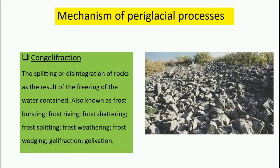The first mechanism is congelifraction, a weathering process in periglacial climates including freeze-thaw action, contraction cracking, and chemical weathering — but freeze-thaw action is by far the most active mechanism of rock shattering. Congelifraction, from the Latin 'congelare' meaning to freeze and 'confractus' meaning to break, involves the freezing of moisture and water during night and subsequent thawing during daytime, causing splitting or disintegration of rocks. As you can see in the picture, this is the consequence of congelifraction.